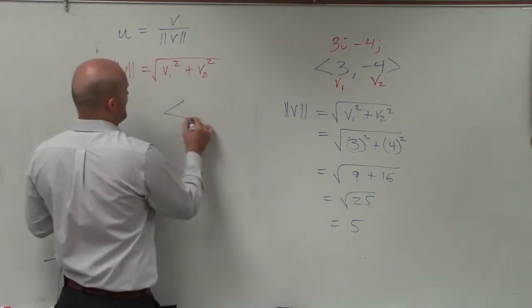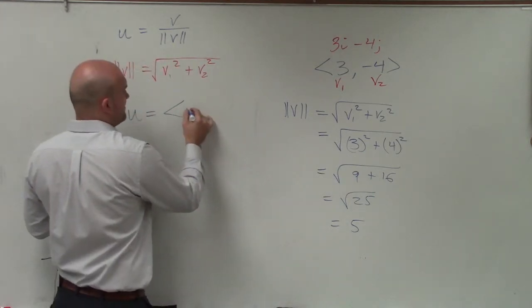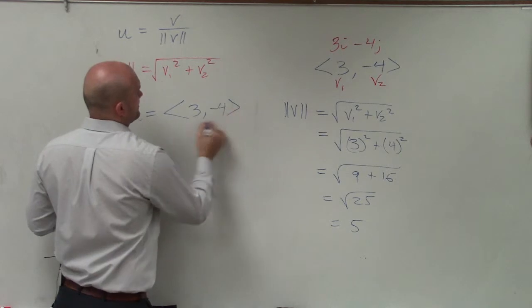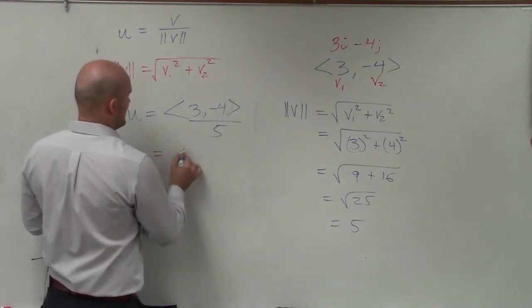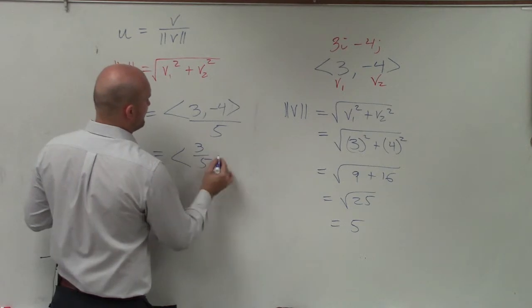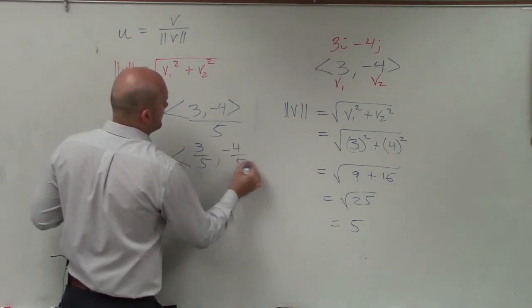So now I take my vector. The unit vector equals my vector <3, -4> divided by 5. I divide the 5 into both of those terms, and I get a final unit vector of <3/5, -4/5>.